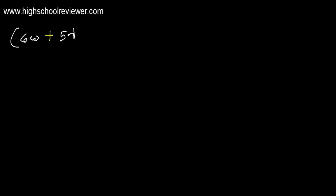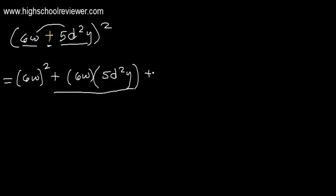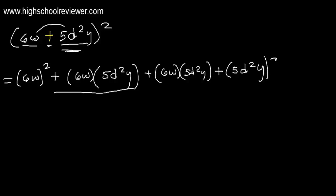Next example: the quantity of 6w plus 5d squared y raised to the power of two. Here 6w is the first term and 5d squared y is the second term. First, get the square of the first term: 6w raised to the power of two. Since this is addition, copy the plus sign and multiply the first and second term: 6w multiplied by 5d squared y. Repeat this, then raise the second term 5d squared y to the power of two — which is always positive since it is squared.